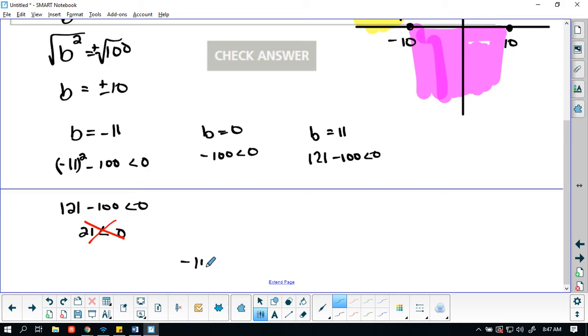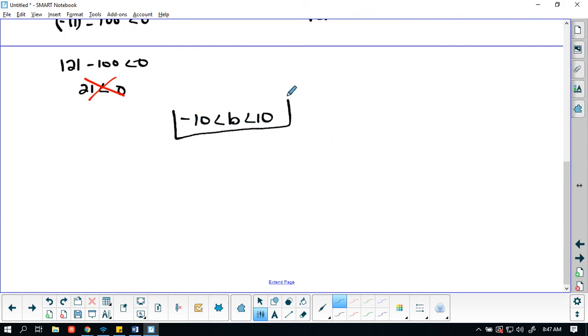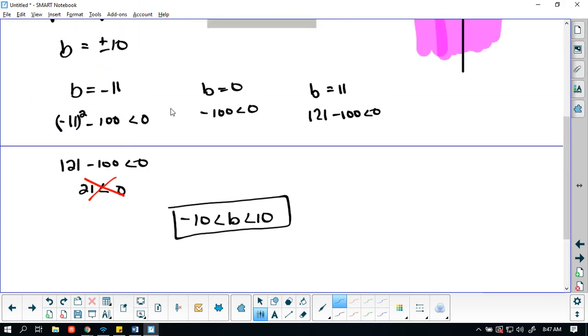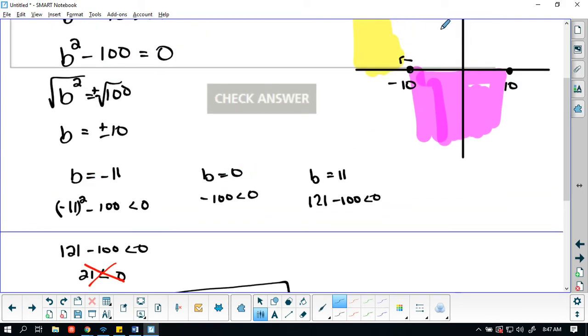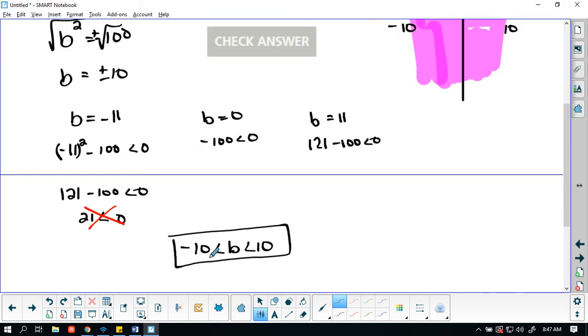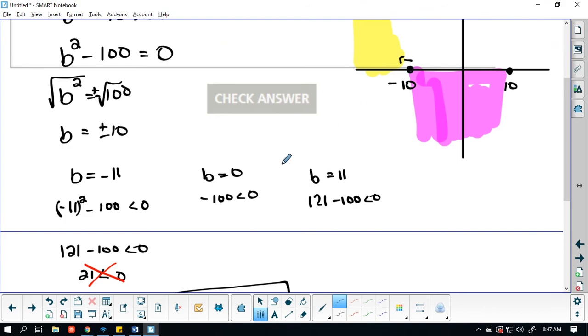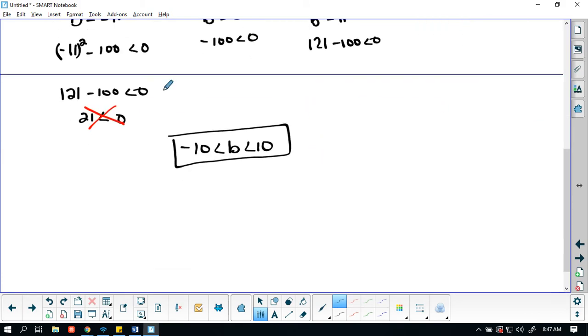So my bounds for b are going to be negative 10 less than b less than 10. And this would be my solution. So any value between negative 10 and 10, not including negative 10 and 10 because negative 10 and 10 are zero. So zero is a one real root. Positive 10 is zero. So that's going to be a real root. So these are our bounds for our triad.